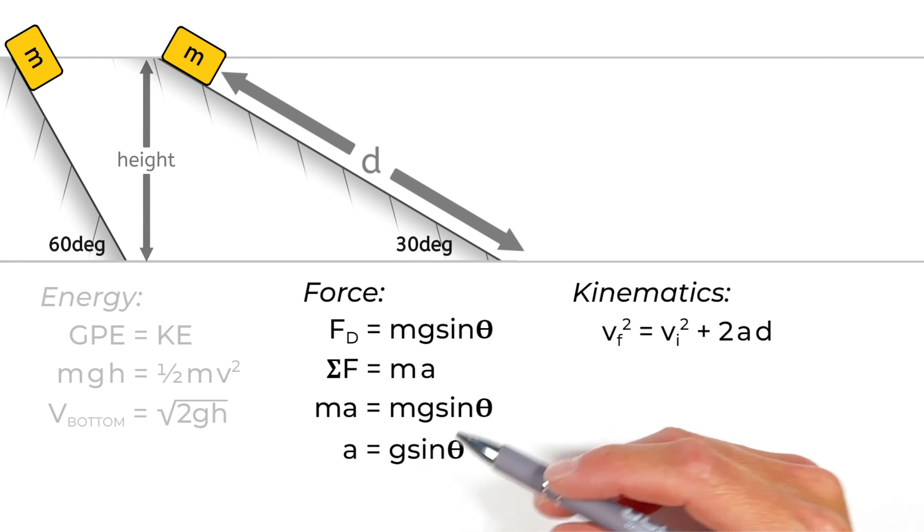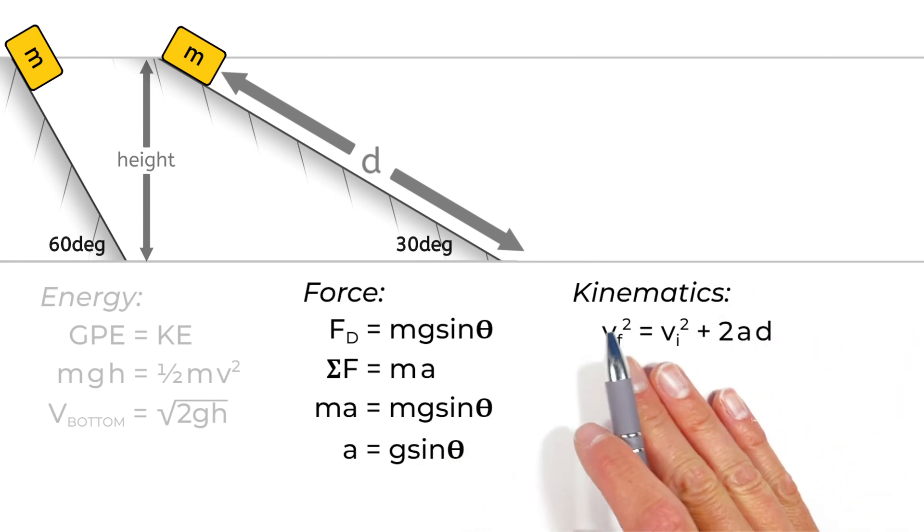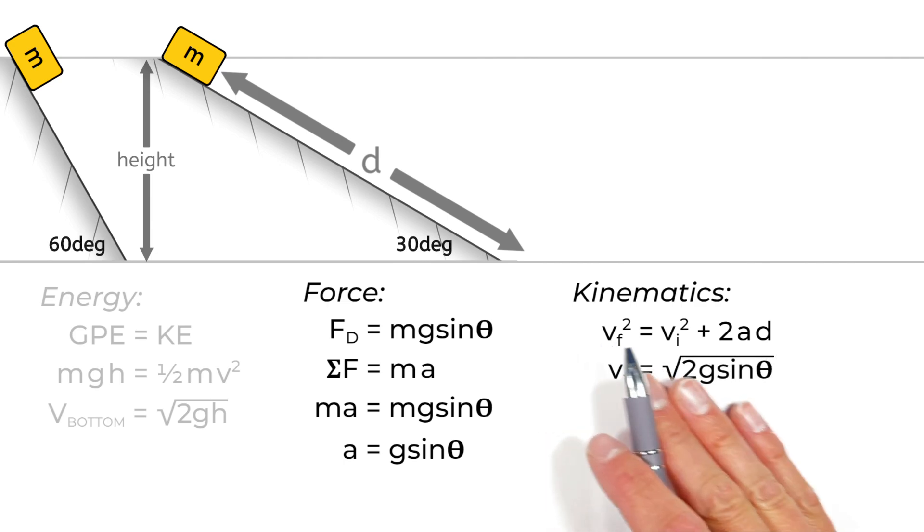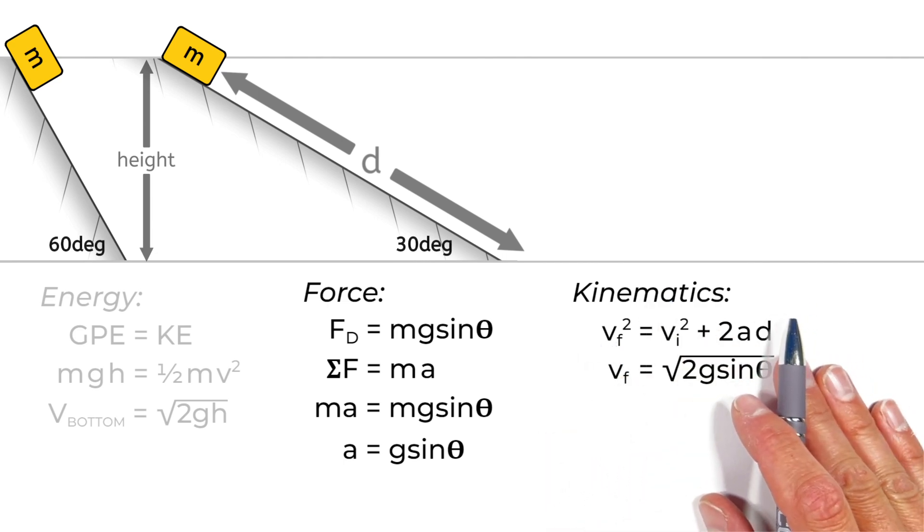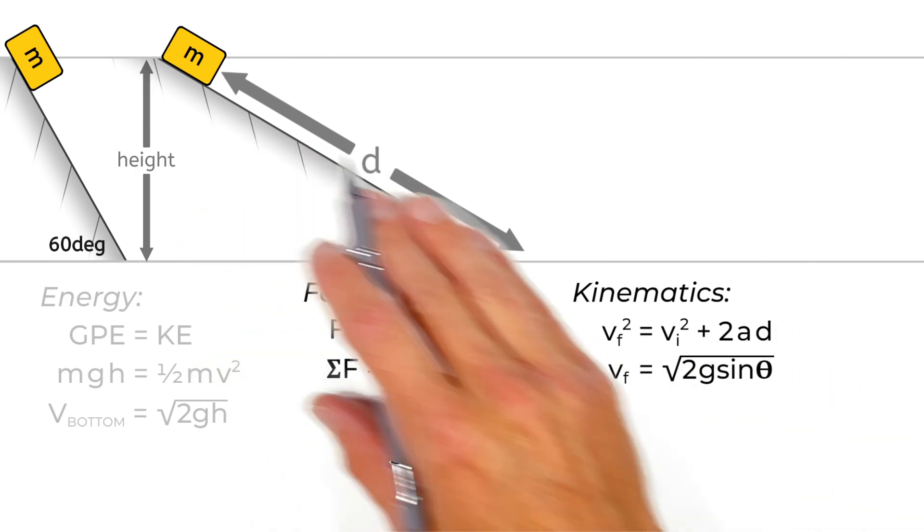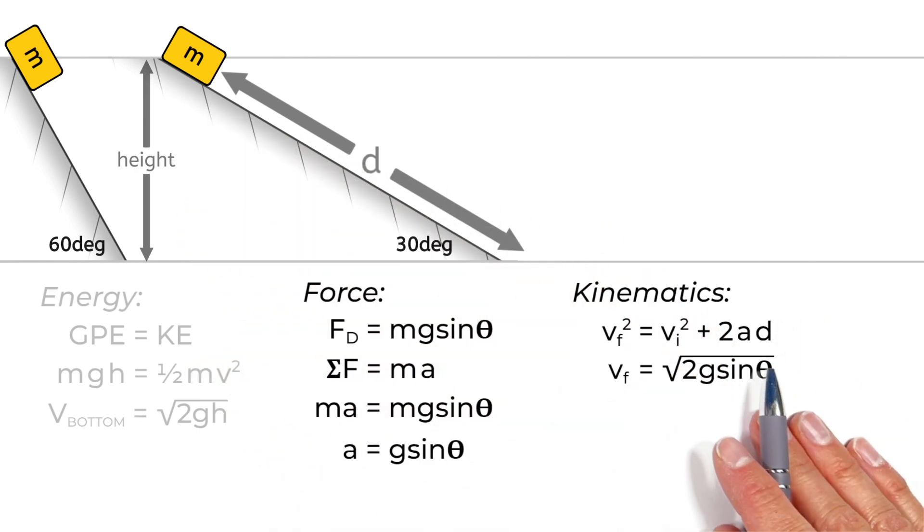Now, we already solved for the acceleration of the block right here. So, subbing that value in, we find the velocity at the bottom of the hill is 2g sine theta multiplied by d, the displacement of the block down the hill, or really, the length of the hill itself.